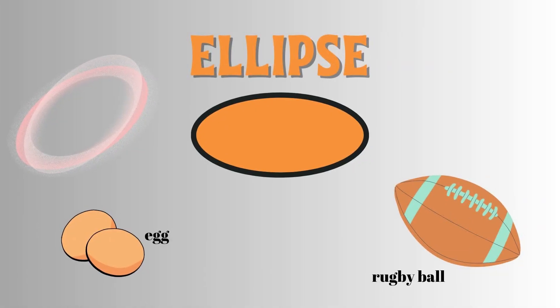An ellipse is a shape with two centers. You can think of it as a slightly squished version of a circle. It is obtained by combining a straight line with an oval shape. Our earth resembles the shape of an ellipse.